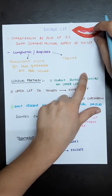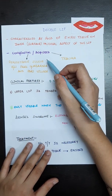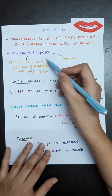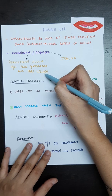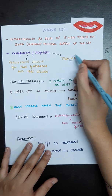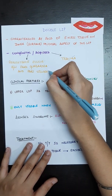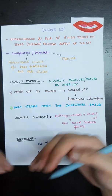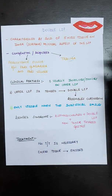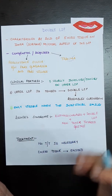Double lip can be congenital or acquired. In the congenital form, it occurs due to persistence of a sulcus between the pars glabrosa and pars villosa. It can also be acquired due to some trauma. Pars glabrosa is the outer part and pars villosa is the inner part — when they are not fused properly, persistence of a sulcus between these two structures causes double lip.